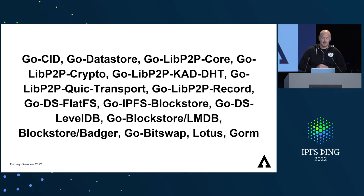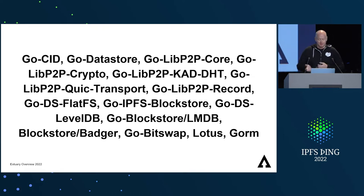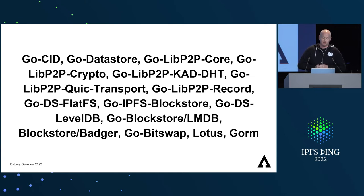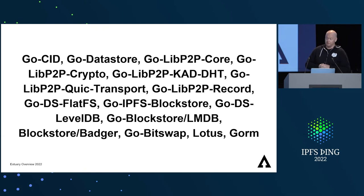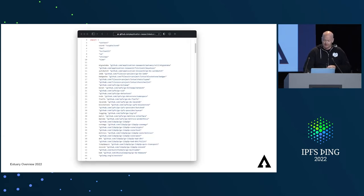As a Web2 traditional tech guy, I thought: why don't I just write it myself? Well, not so much. Estuary uses several libraries and supporting protocols in an attempt to amalgamate Lotus, Kubo, and friends. It makes the IPFS node pretty complicated with a lot of moving parts, especially if you've been in the traditional tech world and you're digging into the code.